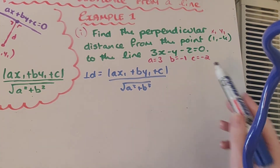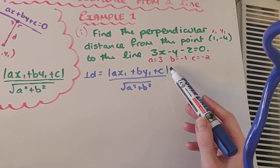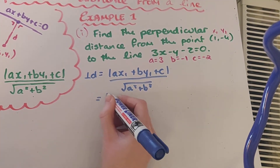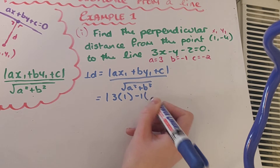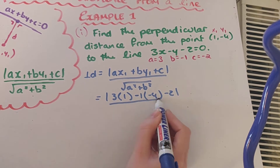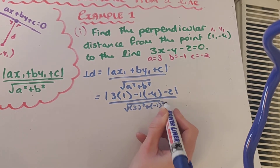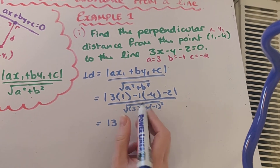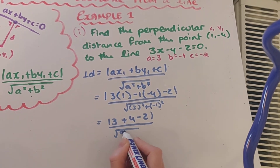Now don't forget, particularly with these minuses, the modulus sign here means that our distance should always be positive. So we need to ensure that whatever number is inside our modulus sign is always going to be positive. Now substituting in what we know: we have 3 times x1 which is 1, minus 1 times y1 which is minus 4, plus c which is minus 2, all over the square root of a squared plus b squared — so 3 squared plus minus 1 squared. So 3 times 1 gives me 3, plus 4, minus 2, all over the square root of 9 plus 1.